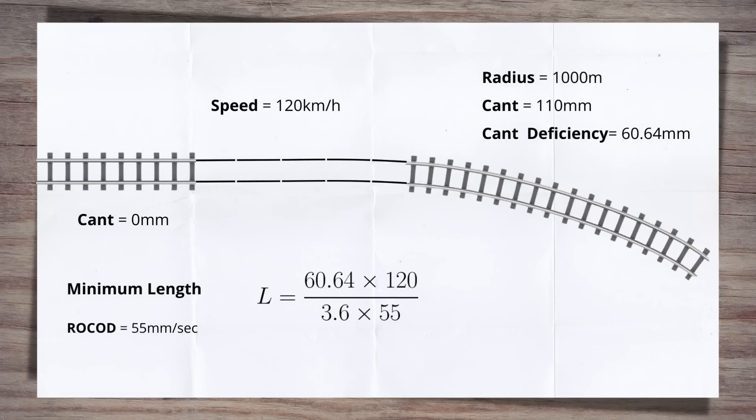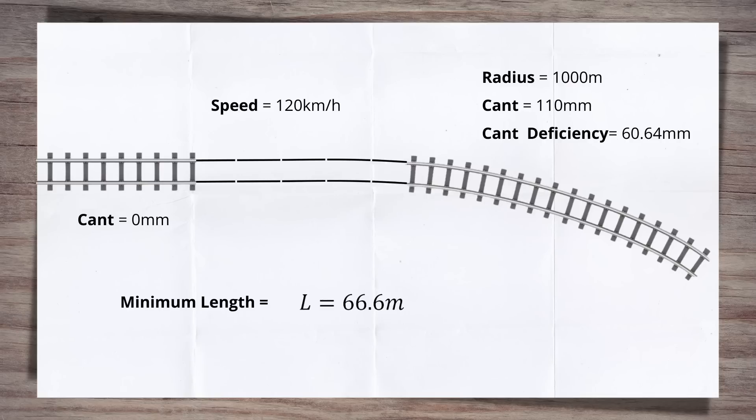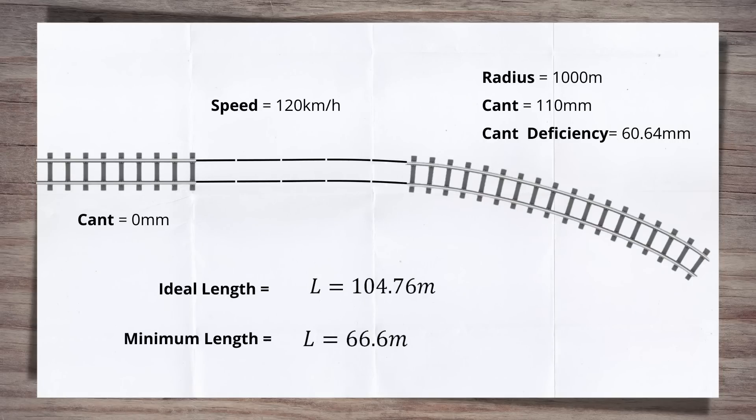And then for cant deficiency, we look again at the equation with 55 millimetres per second, and this gives us a length of 36.76. Again, if we review the two calculated lengths, we can see that we need to take the longer one, as we did earlier. This gives us a minimum length of 66.6 metres. So this gives us, as the designer, some key values to work with. It's important to remember that although we have calculated what we have called the ideal value, the transition can be longer than this. This will have rates of change that are lower than the limits stated in the standard, which is not an issue. So ideally, our transition should be no shorter than 104.76 metres, but it can be as low as 66.6 metres if needed.